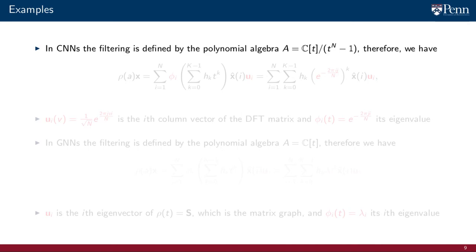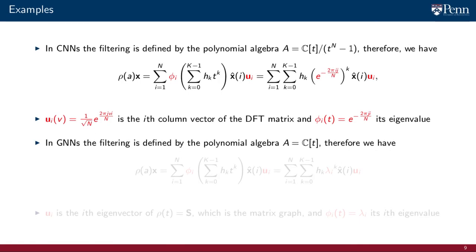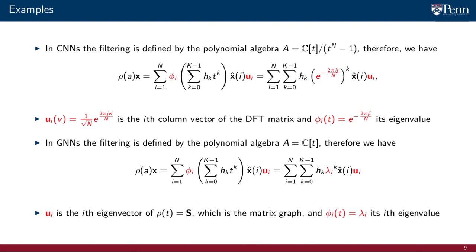Finally, we mention a couple of examples to make the notion of spectral representations more concrete. For traditional CNNs, filtering is defined by the algebra of polynomials modulo t to the power of n minus 1. The spectral representation of the filtering of a signal x is expressed in terms of the maps phi sub i associated to the irreducible sub-representations, which in this case are given by the eigenvalues associated to the column vectors u sub i of the DFT matrix. For GNNs, we consider the polynomial algebra with a single variable t. The spectral representation of the filtering of a signal x is expressed again in terms of the maps phi sub i, which in this case are the eigenvalues of the graph matrix S, while the unit vectors u sub i are the eigenvectors of the operator S.